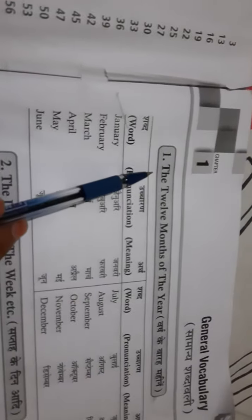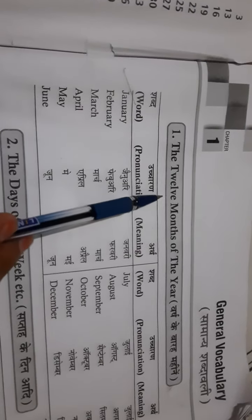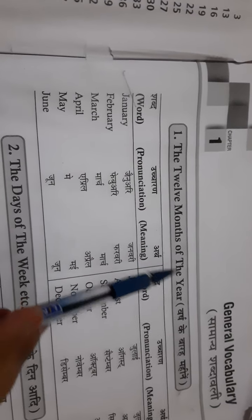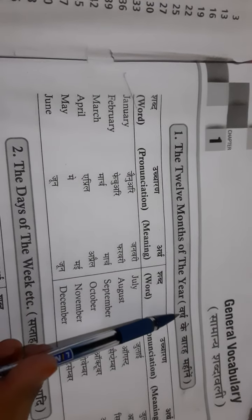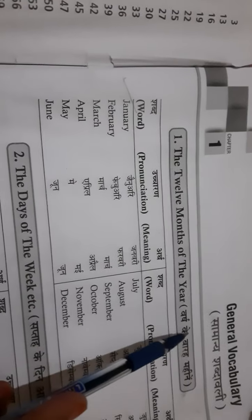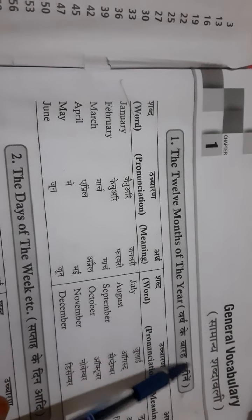Now, we will start with point 1. And the point is the 12 months of the year — means, the words for the 12 months.